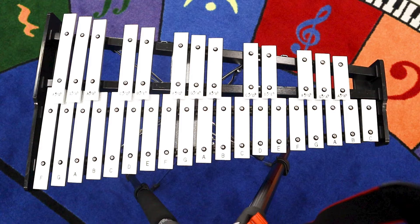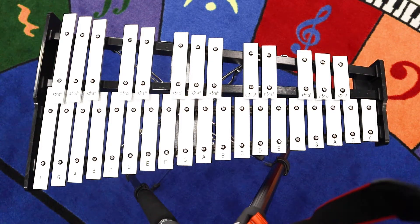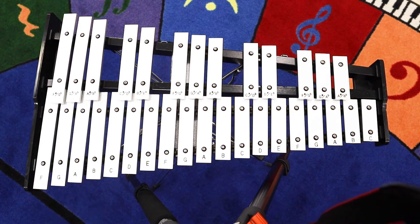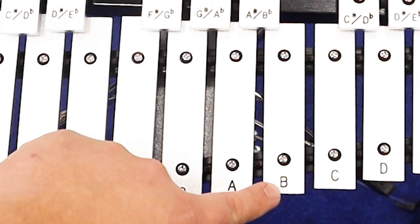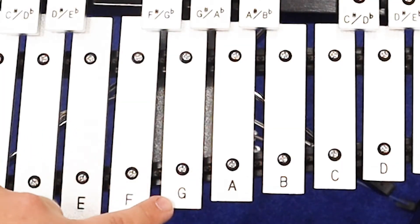Today I'm going to teach you how to play hot cross buns on the bell set. The three notes we need for hot cross buns on the bell set are B, A, and G.